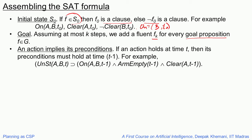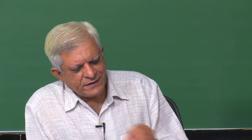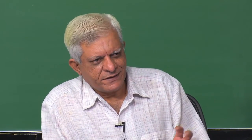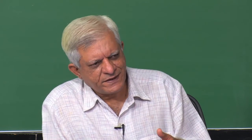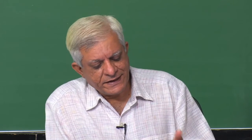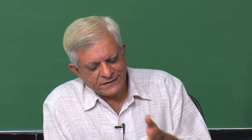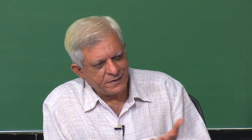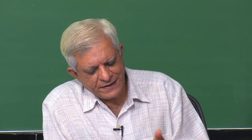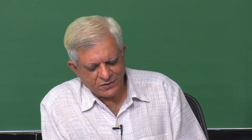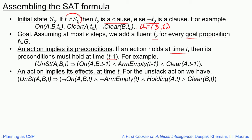Like in planning with CSPs, an action implies its preconditions. If an action holds at time t, then its preconditions must hold at time t minus 1. For example, the unstack a b action in the state variable description means it is related to the fact that a is on b in the previous state. Here we are stating it as a formula in logic: if unstack a b is true at time t, then three things must have been true at time t minus 1 — a must have been on b, the arm must have been empty, and a must have been clear.